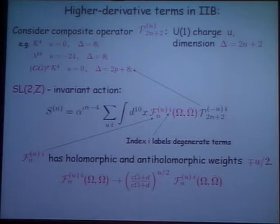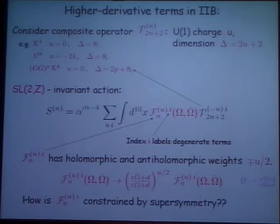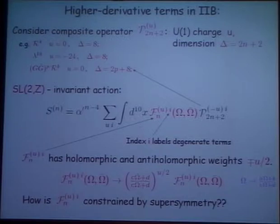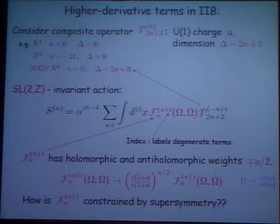So these coefficient functions F contain a huge amount of information about the particular terms in these series. The question is: how are the F's constrained by supersymmetry? Let me stress that the F's are not holomorphic, and the situation here is very different from examples with less supersymmetry, where holomorphicity plays an important role in constraining the corresponding coefficient functions.